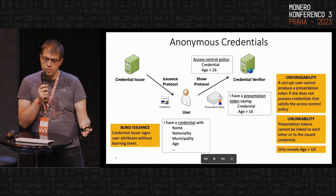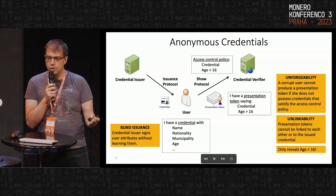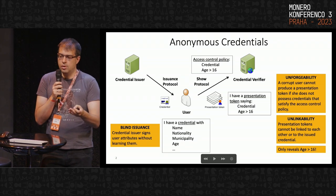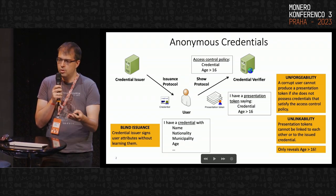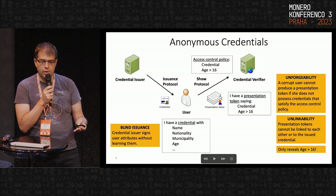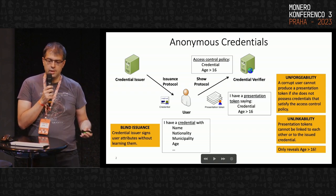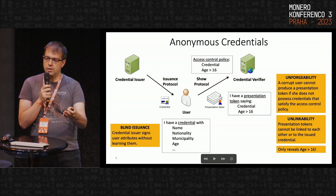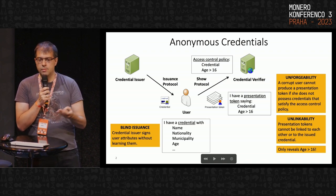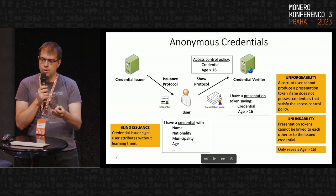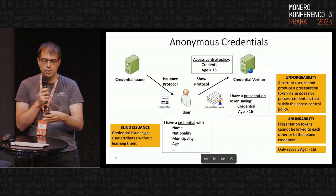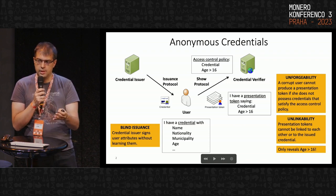If we use just signatures to implement credentials, we would have a scheme that is not privacy-preserving. The reason is simple: when you want to show your credential you must disclose all your attributes. For example, if we have a credential verifier like a service provider that needs to verify that your age is over 16, and you just present your signature, then to verify that, the verifier needs to see all your attributes. That's why we need anonymous credentials — our goal is that when you show your credential you only reveal to the verifier that your age is over 16, and no extra information, not even your credential itself.